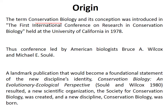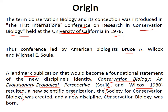The term 'conservation biology' was born in 1978, first used at the Conference on Conservation Biology held at the University of California. The conference was led by two American biologists, Bruce and Michael, who made a landmark publication. Soleil and Wilcox then published 'Conservation Biology: An Evolutionary and Ecology Perspective' in 1980. This publication resulted in a new scientific organization — the Society for Conservation Biology — and introduced conservation biology as a new discipline.